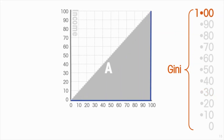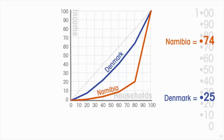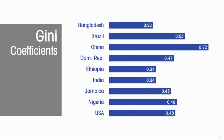At the other extreme — perfect inequality — where all households except one earn nothing and one household earns all of the income, the Gini coefficient is one. Going back to our comparison: Denmark's Gini coefficient is 0.74 and Namibia's is 0.25. Here's a random sampling of Gini coefficients from around the world to give an idea of the actual range we might observe.